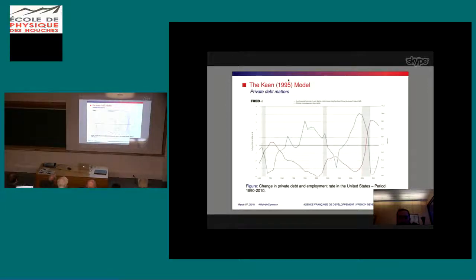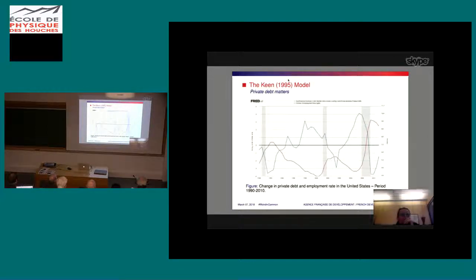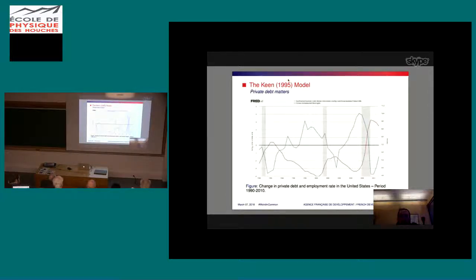When the private debt to GDP ratio increases, it means private debt is increasing faster than GDP. The red curve is unemployment, and there is a strong negative correlation between the two. This is easy to understand: if private debt increases, it means entrepreneurs are borrowing money to finance investment, so they will hire more people and unemployment will decrease.